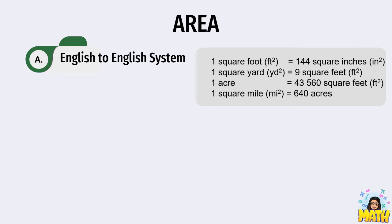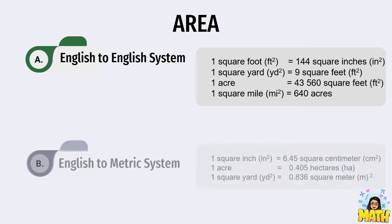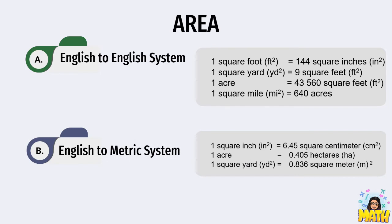Also: 1 square yard equals 9 square feet, 1 acre equals 43,560 square feet, and 1 square mile equals 640 acres. Those are the English to English conversions for area. For English to metric, we convert inches, acres, and yards to square centimeters, hectometers, or square meters.